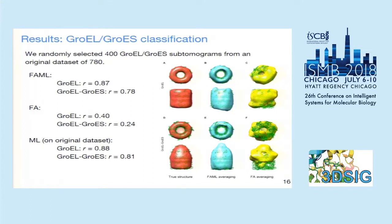The maximum likelihood based method, in their original paper reported on the full 780 subtomogram dataset, achieved a cross-correlation of 0.88 and 0.81. So our method achieved a comparable result with the maximum likelihood based method, but with significantly fewer subtomograms.